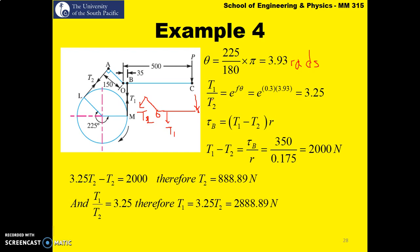The braking torque was given as 350 Nm. So we know that your braking torque is T₁ minus T₂ multiplying by the radius. So T₁ minus T₂ is 2000 N. And we also know that T₁ over T₂ is equal to 3.25 and T₁ minus T₂ is 2000, we can substitute and solve for T₂ and T₁ respectively. So T₂ is 888.89 N whereas T₁ is 2888.89 N.